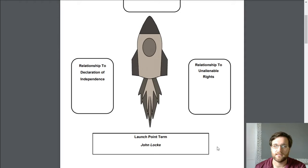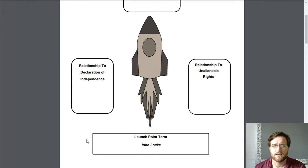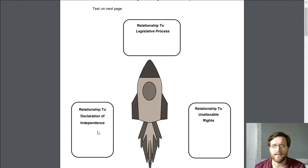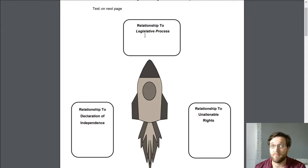What we're looking at is how John Locke affected different things. Not all of these occurred while he was living, but he had relationships to them. So what we're looking at specifically is his relationship to unalienable rights, the Declaration of Independence, and the legislative process. How do we find out about his relationship to these things?